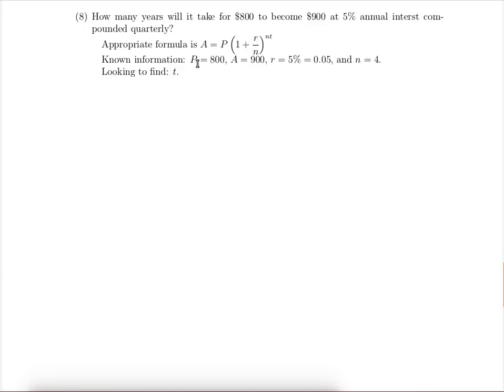Our known information is that our present value is $800, our future value is $900, the interest rate is 5%, and we're compounding quarterly, so n is equal to 4. We want to find out how many years this will take.